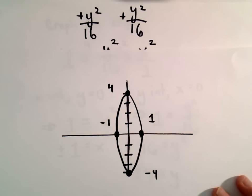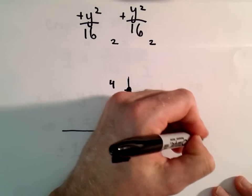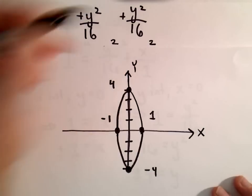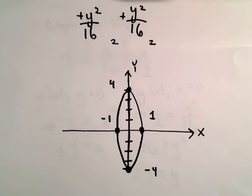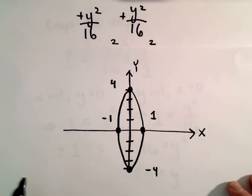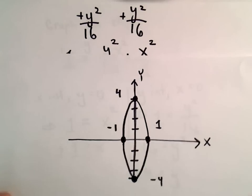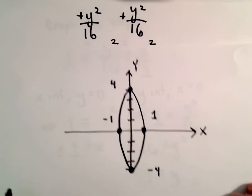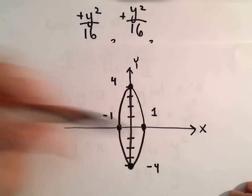You could always plot more points simply by picking more values for x and then going back and solving for y. So you could always find other points on the graph by doing that.